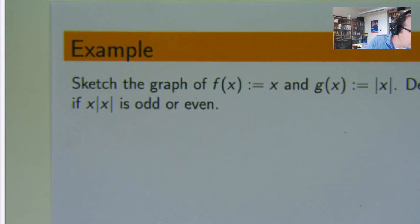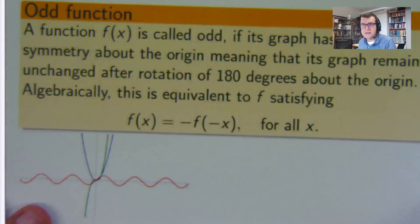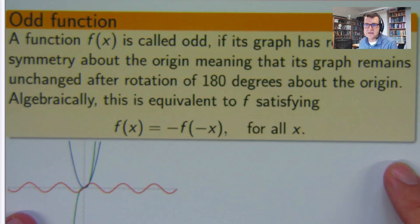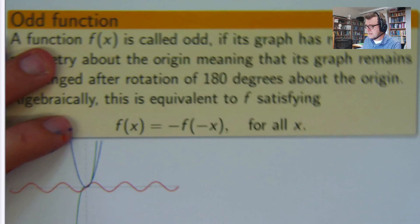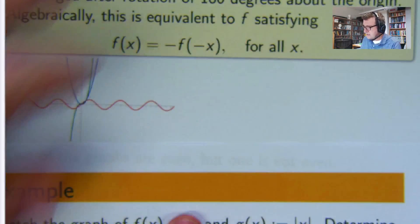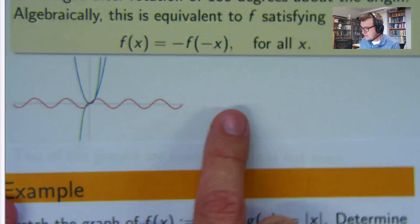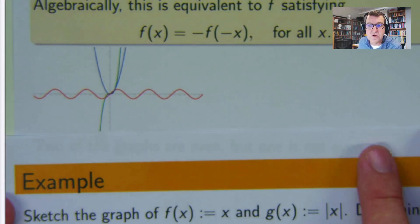And what about odd functions? So this is an odd function. Basically what you do is you rotate the graph 180 degrees around the origin and if you get the same graph then it is odd, and again there's a little algebraic expression there. So in this case the red graph is odd, the green graph is odd, but the blue graph is not odd.